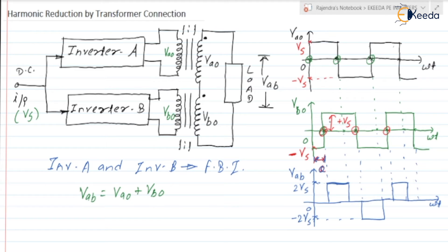Vab is the addition of these two voltages. From 0 to theta: Va0 = +Vs and Vb0 = −Vs, so their sum is 0. In the next interval both are +Vs, giving 2Vs. Then one is −Vs and the other +Vs, giving 0 again. Then both are −Vs, giving −2Vs. So the output Vab is a quasi-square wave, while Va0 and Vb0 are square waves.